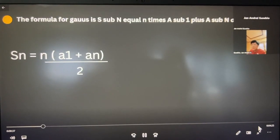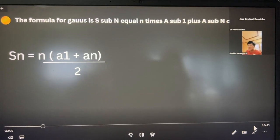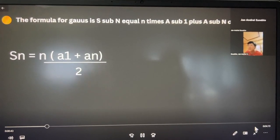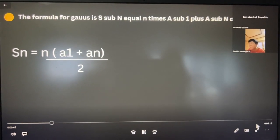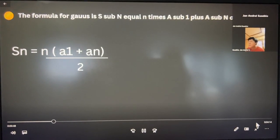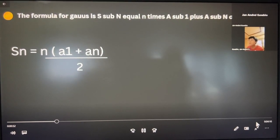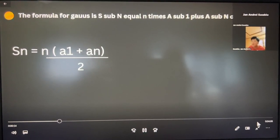So for that formula, Gauss's formula is S sub N equals N times A sub 1 plus A sub N, all over 2. This is the formula.